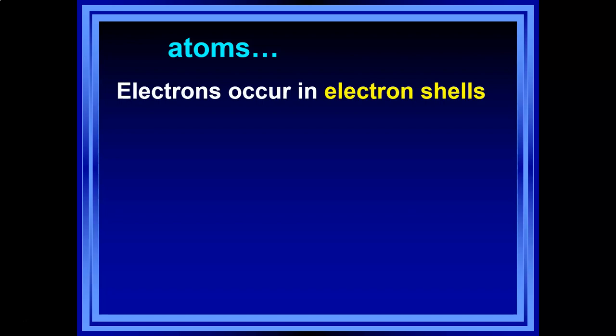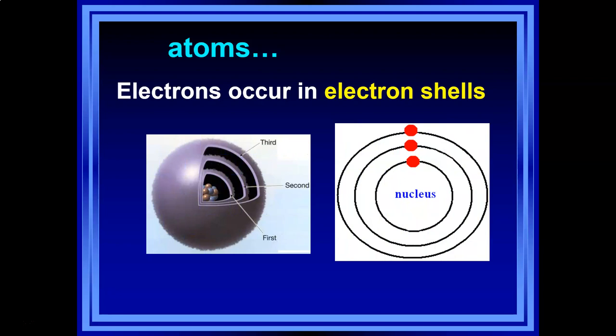Electrons buzz around in electron shells, and they want to be as close as possible to the nucleus. They're negatively charged particles drawn toward the positive protons in the nucleus — opposites attract. So electrons want to be as close as possible to the center, but there's only so much room near the nucleus, so they form shells filling from the innermost outward.